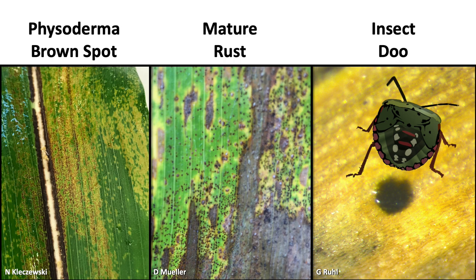There are several other diseases and disorders that can look like tar spot, and you need to be able to differentiate these from tar spot, because these aren't things that are going to be well-managed through a fungicide application at tassel.